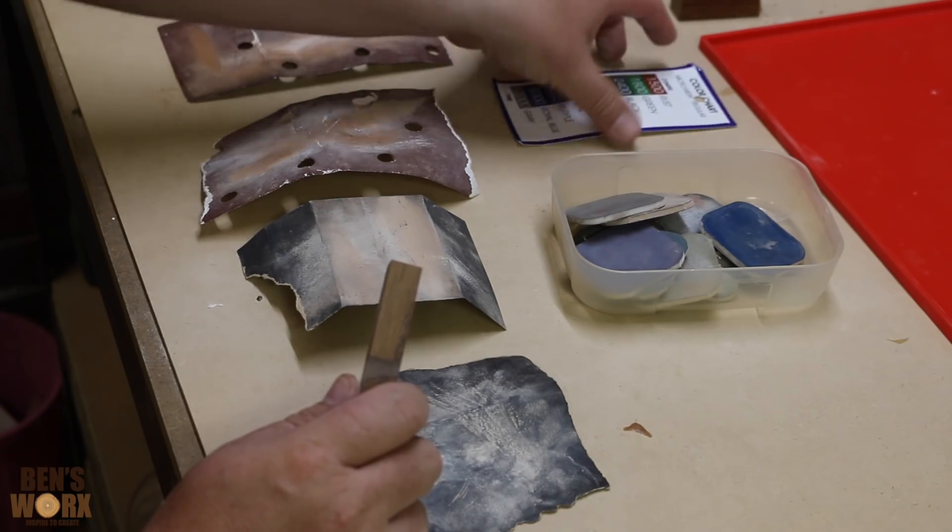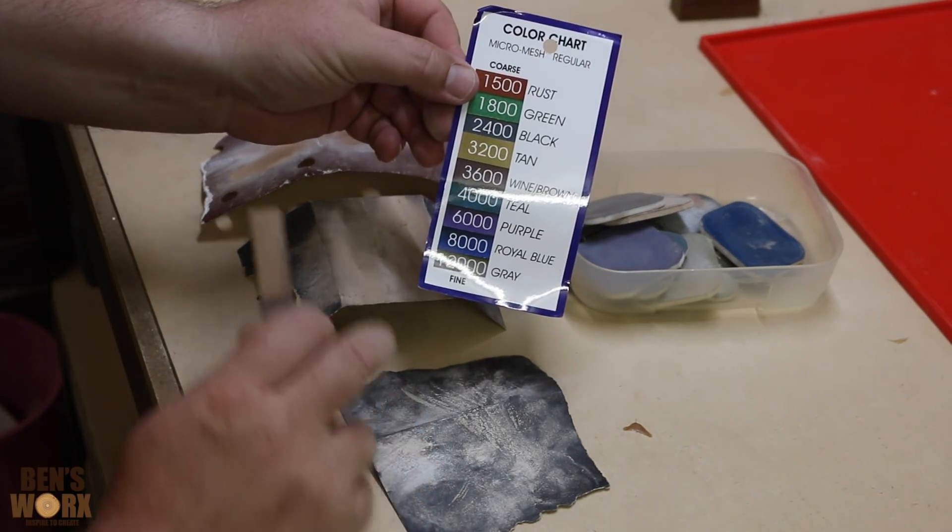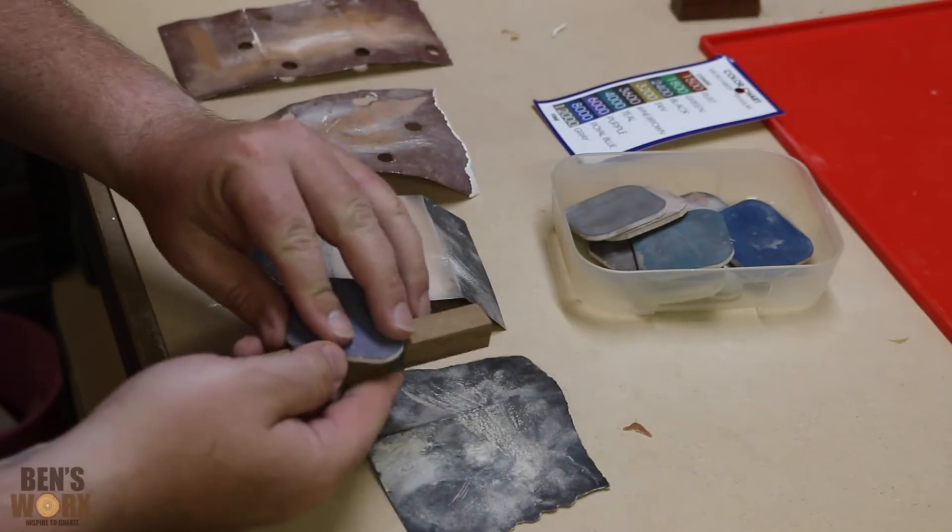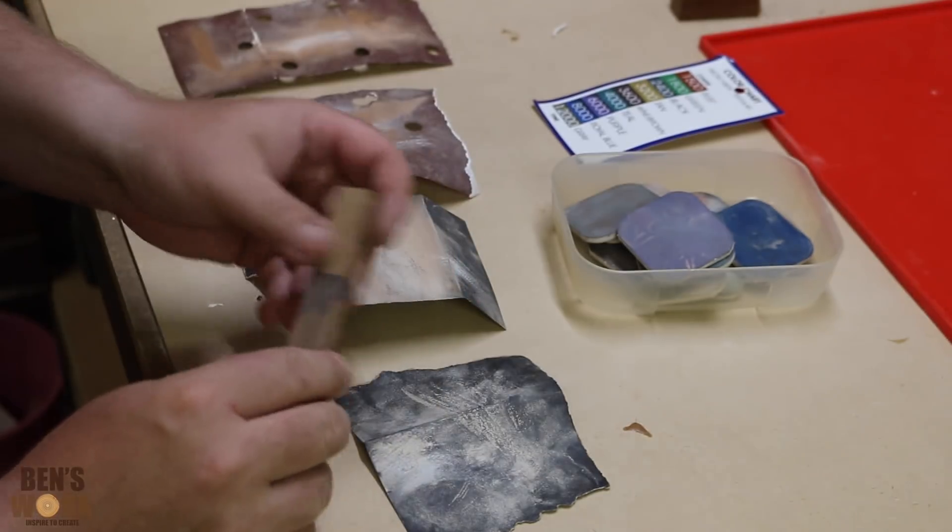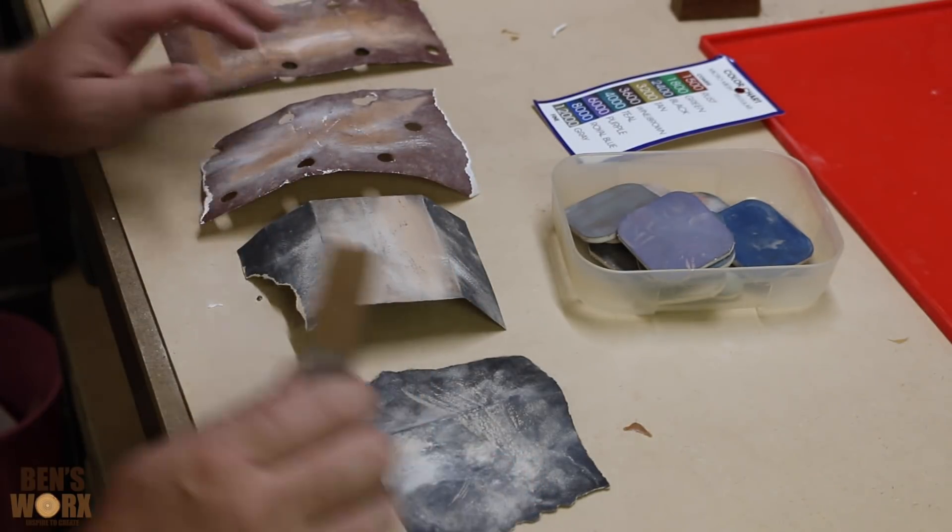Once I've run through all them, I'm then going to go to the micro mesh which starts at 1500 and runs all the way down to 12,000. Now these pads are quite small, so I will be taking my time with this one and trying not to round over any of my edges. Now I'm not going to bore you guys with too much of this, so I'm just going to get straight into it.